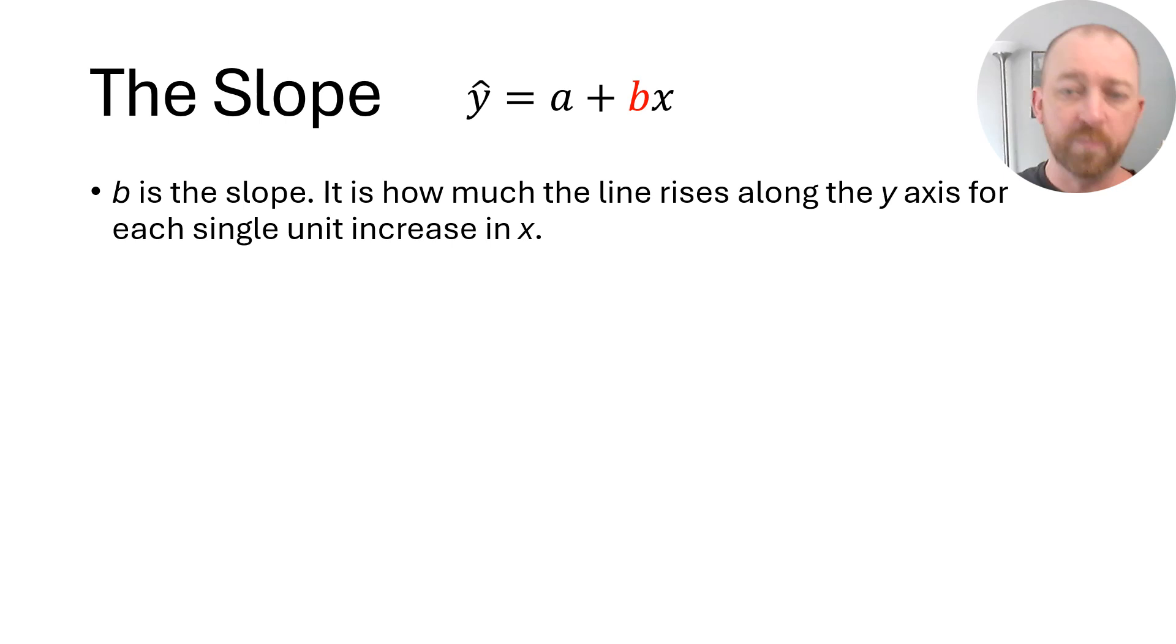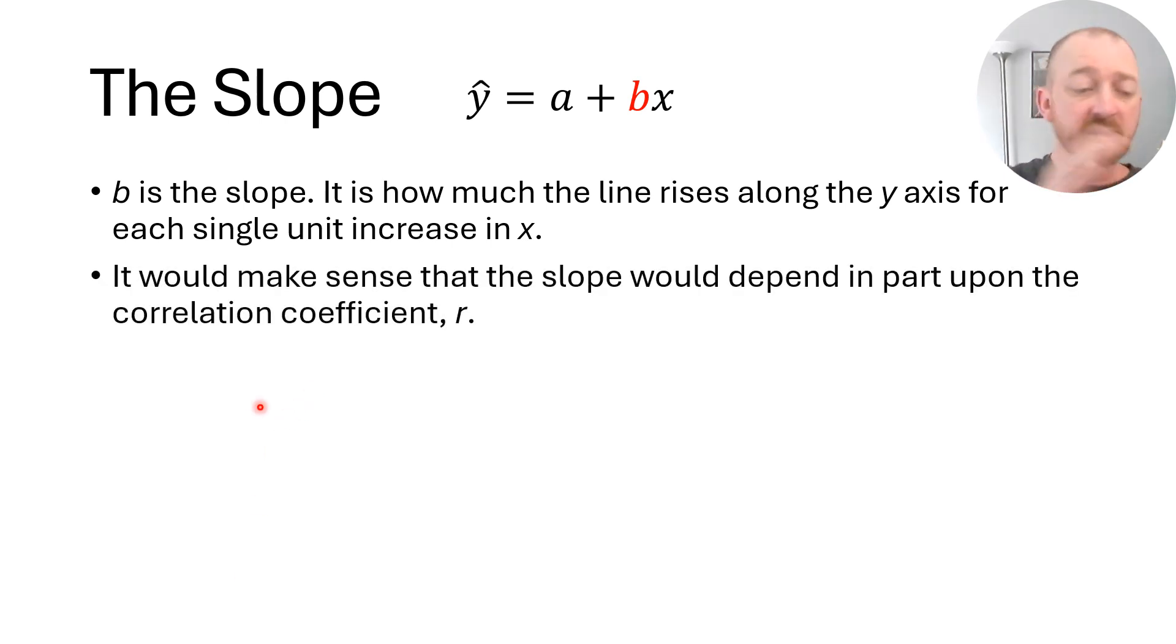B represents the slope. It makes a lot of sense that if we're talking about how much we rise over our run, it should depend quite a bit on the correlation coefficient, because that gives us some idea of just how much that slope rises. And so here's our equation. This is the correlation coefficient that we've calculated for these two variables. If that doesn't sound familiar, I made a couple of videos explaining correlation and how to calculate a correlation coefficient. This is the standard deviation of the Y variable, the standard deviation of the X variable. If you don't know how to calculate those, I also made videos about how to calculate standard deviations. Or you can have a computer do it.